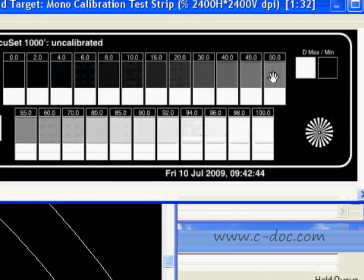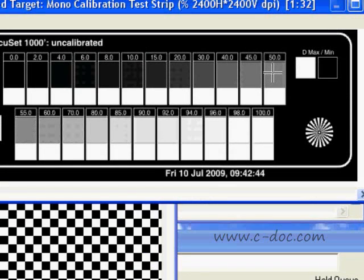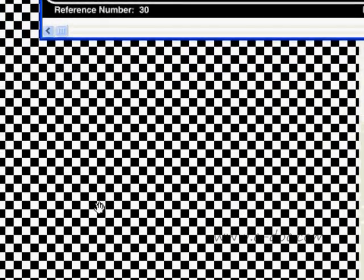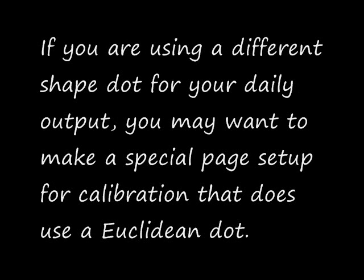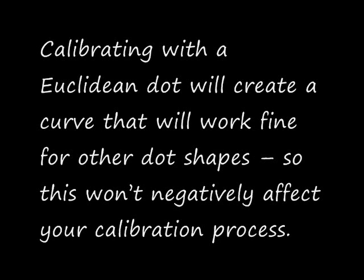The next thing I'd like to zoom in on is the 50% dot on our calibration strip. An uncalibrated Euclidean screen produces a checkerboard at 50%. This is another way of telling if you're over or underexposing your film. Once you have exposed and processed your film, look closely at the checkerboard. If the corners of the black squares are overlapping each other, then you're overexposing. If the corners of the white squares are overlapping each other, then you're underexposing. Not every RIP is set to use a Euclidean dot — this is a setting in your page setup and will affect everything you rip. If you are using a different shape dot for your daily output, you may want to make a special page setup for calibration that does use a Euclidean dot. Calibrating with a Euclidean dot will create a curve that will work fine for other dot shapes, so it won't negatively affect your calibration process.